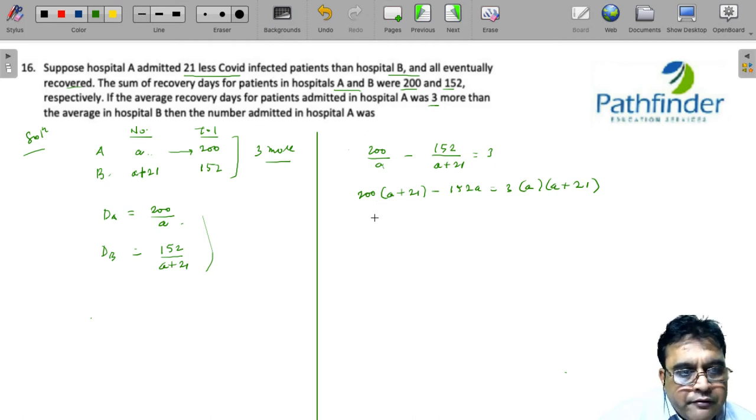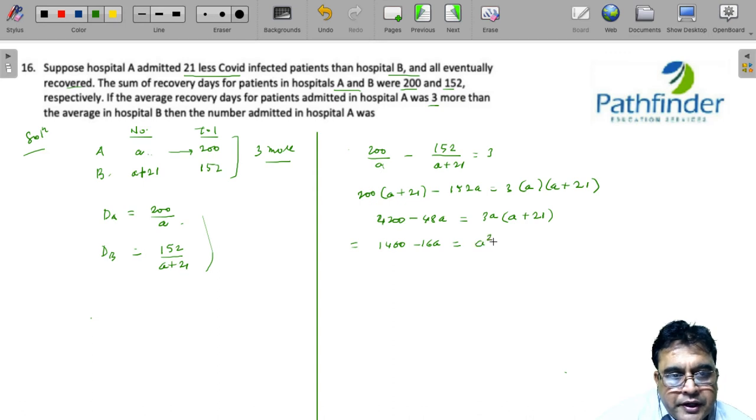So you have 4200 minus 48A is equal to 3A into A plus 21. 3 will get cancelled out. So you will have 1400 minus 16A... minus 1400 is equal to 0.